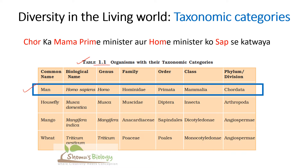So if you remember that sentence, you can easily find out the classification scheme for humans. 'Chor' stands for Chordata, 'mama' for Mammalia, 'prime' for Primate, and then 'homo' — because you already know homo is a genus — and the species will be sapiens. So homo sapiens. That is how you remember the human classification scheme based on 'Chorka mama prime minister or home minister ko sab sekatwaya.'